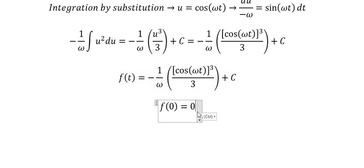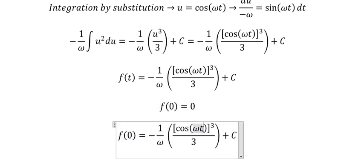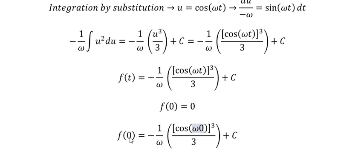We put t = 0 to find the constant C. Since f(0) = 0, we substitute zero into the equation.